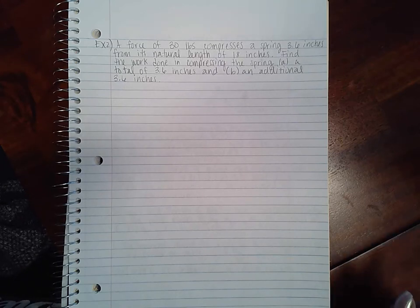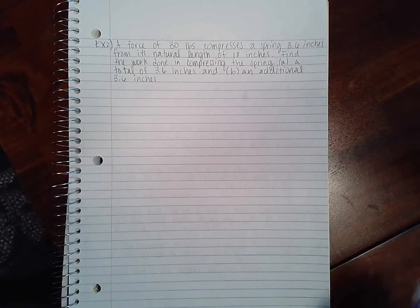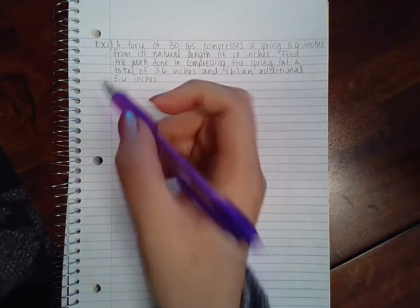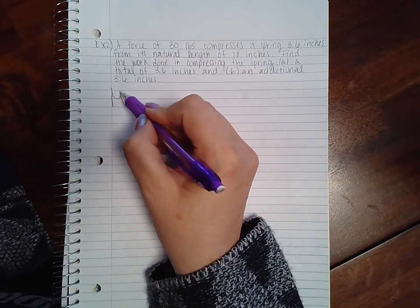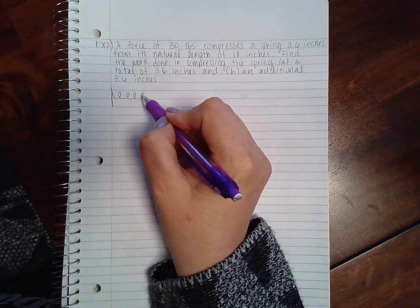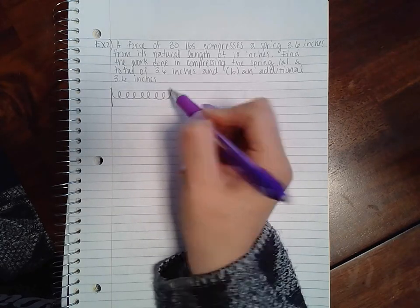Find the work done in compressing the spring: (a) a total of 3.6 inches, and (b) an additional 3.6 inches. So we have a spring—this is where the spring starts. I'm just doing my elementary drawing. This is the spring in its natural state.